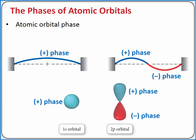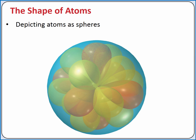Atomic orbitals also have phases, just as waves have phases. The phase of an orbital will affect how it interacts with an overlapping orbital. Finally, atoms are typically depicted as spheres, because as all of these orbitals overlap, the result resembles a sphere.